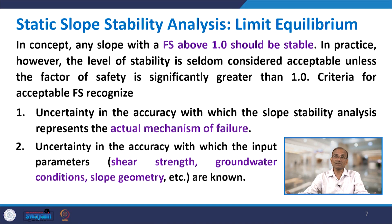In practice, a factor of safety slightly above 1 is seldom considered acceptable. Criteria for acceptable factor of safety recognize uncertainty in the accuracy with which slope stability analysis represents the actual mechanism of failure. Though the factor of safety may be more than 1, it has been determined with some uncertainties. The first uncertainty is the methodology itself — how accurately the slope stability analysis represents the actual failure mechanism occurring in the field. These methods may be on the conservative side, but it is not guaranteed they represent the actual failure mechanism.